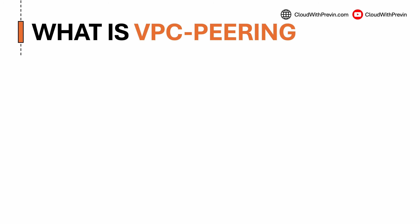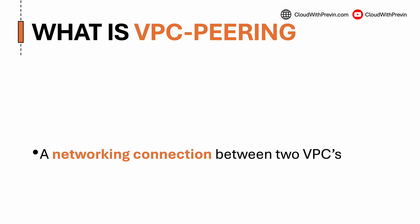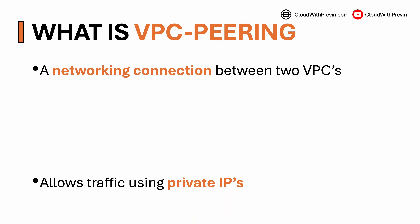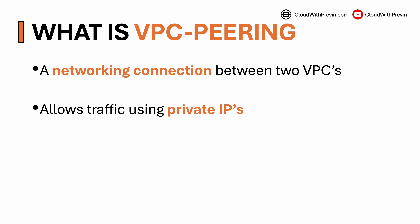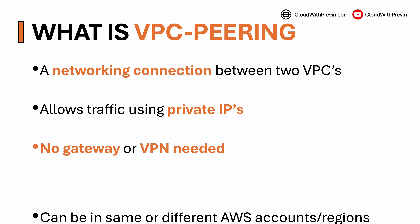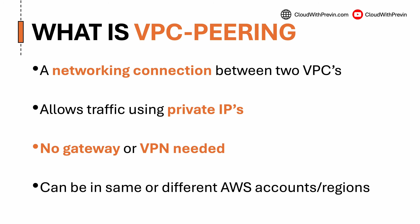So what exactly is VPC peering? It is a networking connection between two VPCs that allows traffic to flow using private IP addresses. There's no need for a VPN, no need for a NAT gateway or an internet gateway. And best of all, it works whether the VPCs are in the same AWS account, different accounts, or even different regions.